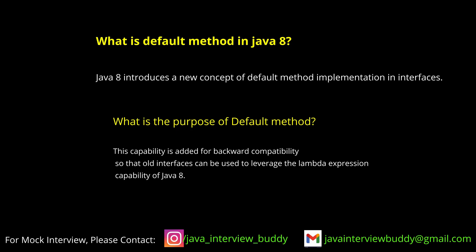Functional interface is a different thing here. In general, in any interface — be it functional or non-functional — you can add a default method. A functional interface is something that has a single abstract method, which defines the core functionality of that interface. But default methods can be used in any interface.